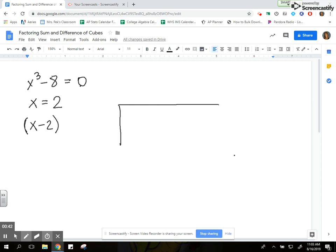So I can use a box to organize my work here. It's going to be a 3 by 2 box, x cubed minus 8 inside the box, and I know one of my factors is going to be x minus 2 so I can put that on the side.